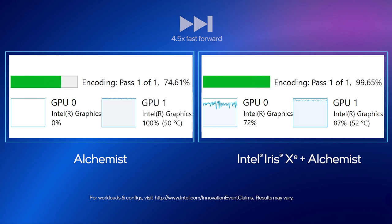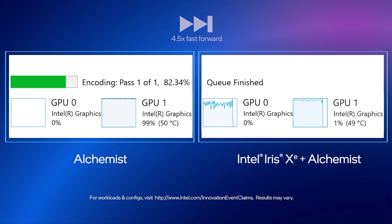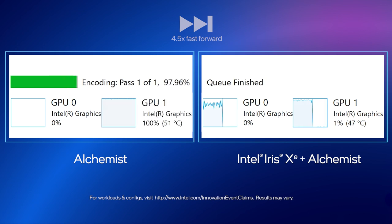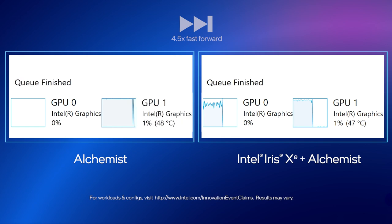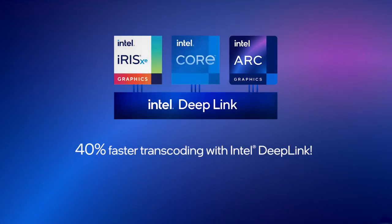At this point, the DeepLink system has completed transcoding, while the single GPU system still has work to do. In this example, DeepLink delivers 40% faster transcode.